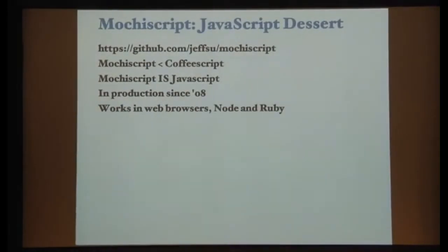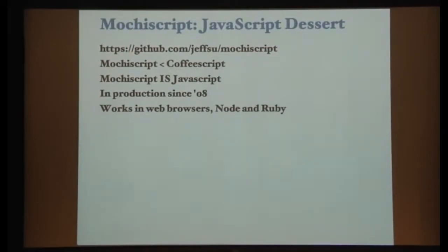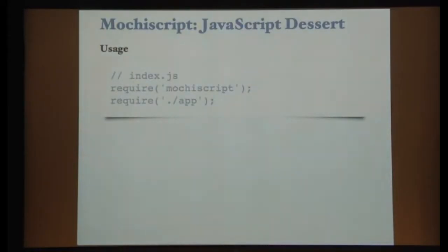So Mochiscript, I call it JavaScript dessert. What is it? It's kind of like CoffeeScript, but it's not that much. It's a lot fewer features. It is JavaScript. So any JavaScript you write is Mochiscript and it will work in Mochiscript. We've been using it for four years and it works in web browsers, Node and Ruby. So you can actually compile this in your Rails app and run it on the client side, as well as Express and you can use it on server side node. Now here's how you would use it. You just require Mochiscript, require app and if that file has a .ms extension, just like CoffeeScript, it'll just run.